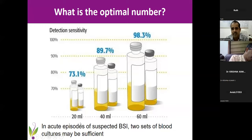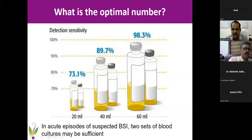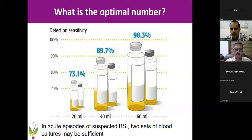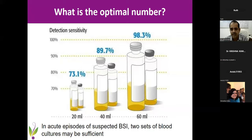At least send two bottles of blood culture from at least two different sites. Don't send two bottles from the same site — drawing blood from one site and putting it into two bottles is only a single occasion. At least two bottles from two different sites makes a big difference in our interpretation of how cultures are coming positive.